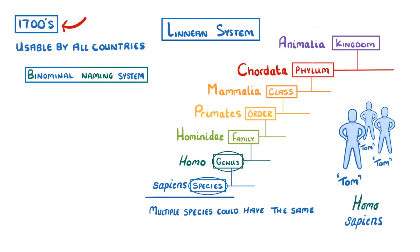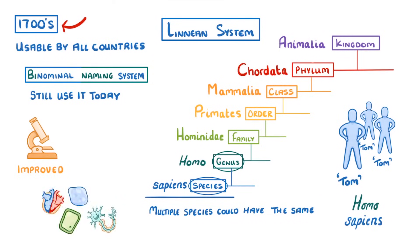This system works pretty well and we still use it today. However, as our microscopes improved and we learned more about the internal structures of different species, new models of classification have been proposed. And although they didn't replace the Linnaean system, they kind of got combined with it.